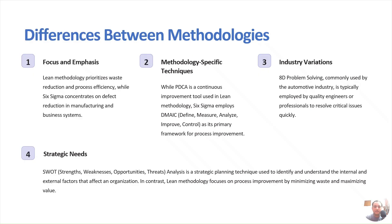Now let us look at the differences. In terms of focus, lean methodology prioritizes waste elimination from processes, while Six Sigma concentrates on defect reduction and variation reduction. There are also methodology-specific techniques — PDCA is a continuous improvement tool used within lean, whereas Six Sigma employs DMAIC as its primary framework.